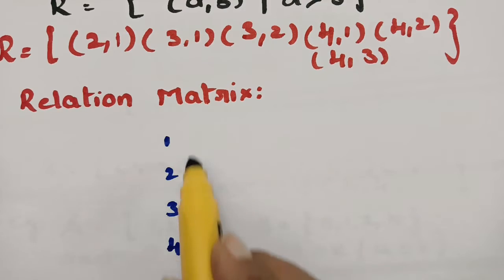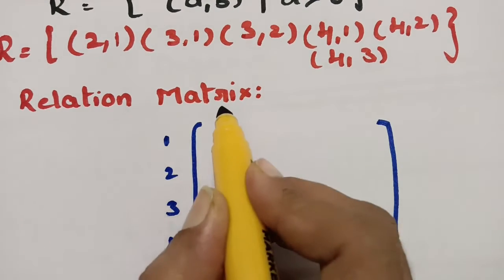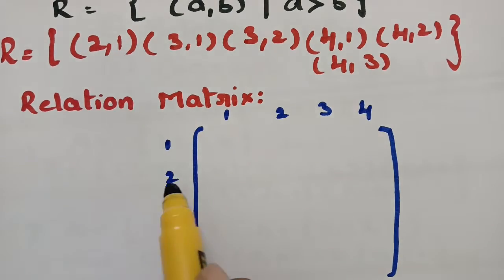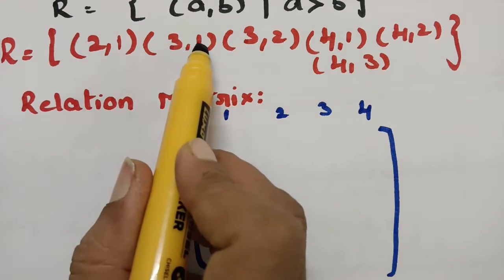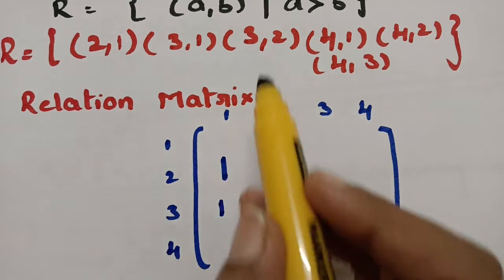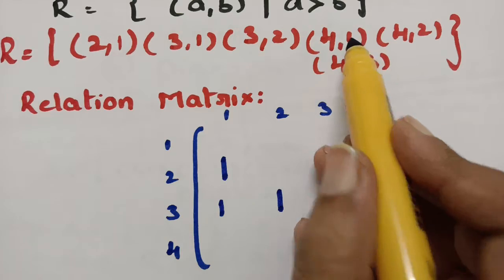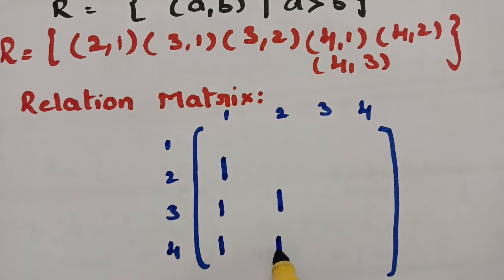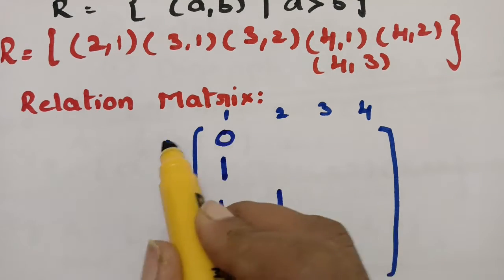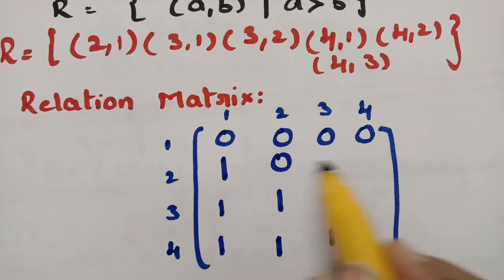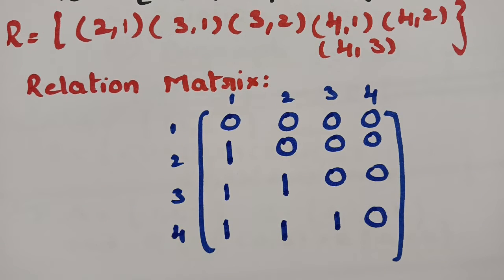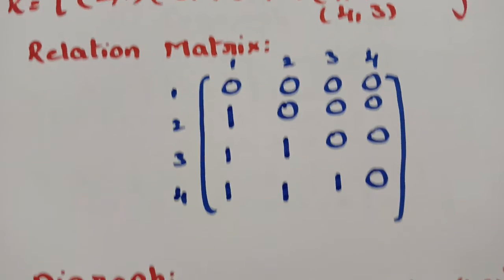In order to represent in matrix notation, the rows are 1, 2, 3, 4 and the columns are also 1, 2, 3, 4. If we have a relation from 2 to 1, there is a relation — keep 1 there. From 3 to 1, keep 1. From 3 to 2, keep 1. From 4 to 1, keep 1. From 4 to 2, keep 1. From 4 to 3, keep 1. The remaining are all 0 — there is no relation from 1 to 1, 1 to 2, 1 to 3, 1 to 4, and similarly for the others. This is the way we represent these ordered pairs in the matrix notation.